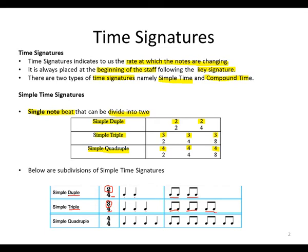Then we have simple quadruple time. Remember, quadruple means four. What kind of beats are they? They are crotchet beats, so it's one, two, three, four crotchets, which can be subdivided into four groups of two quavers each.